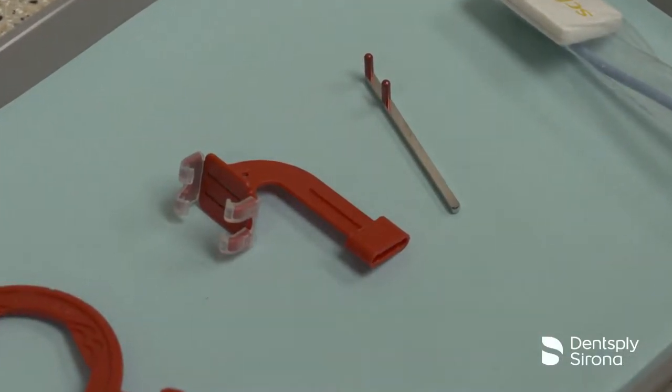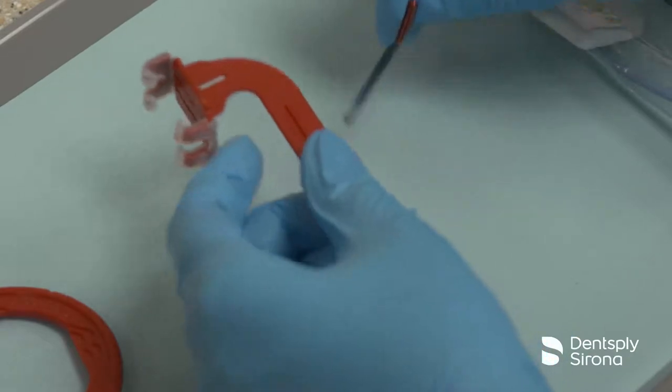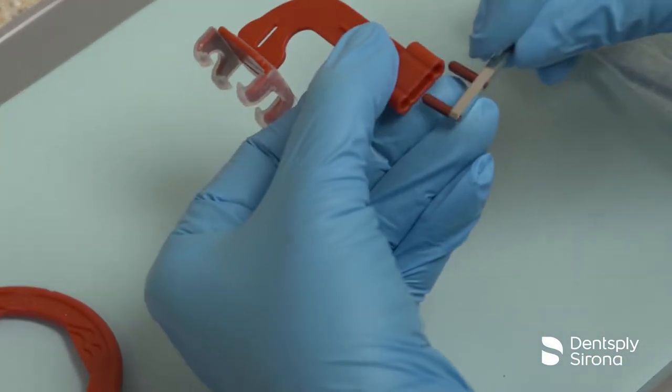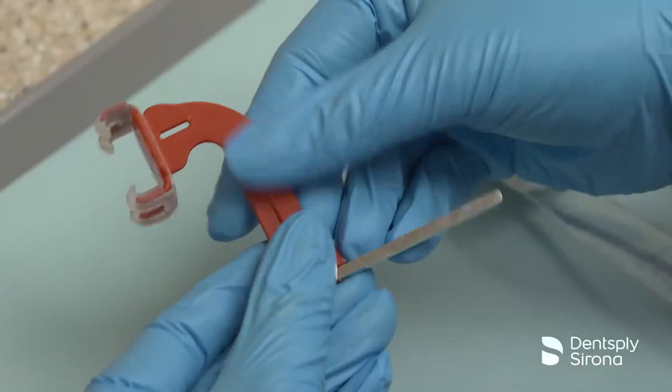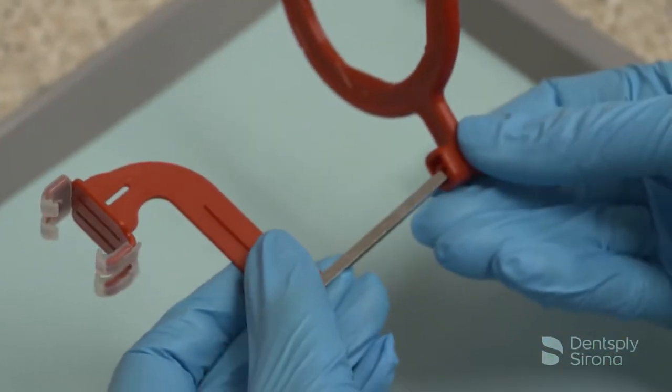To assemble the XCP short arm with the XCP DS-FIT bitewing bite block for images, place the red pins on the arm into the side of the red bite block and slide the arm into the red aiming ring.